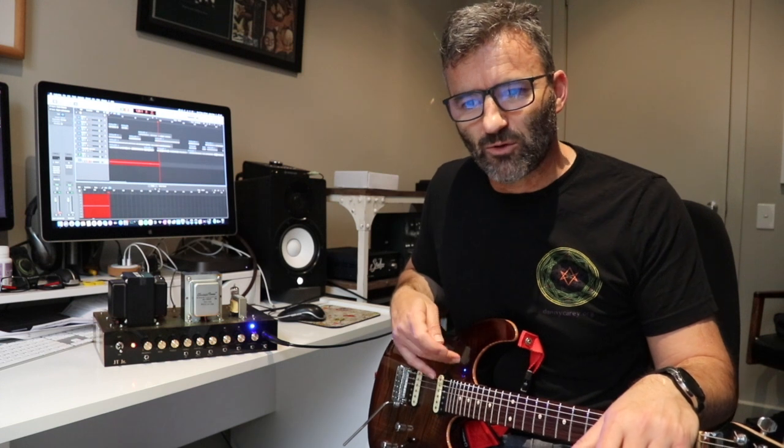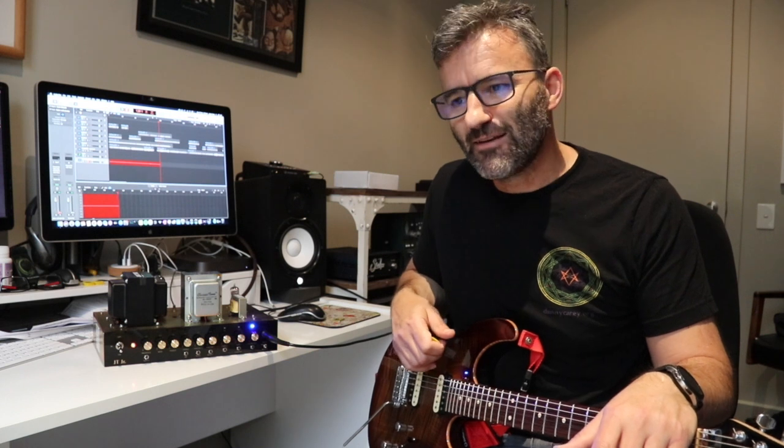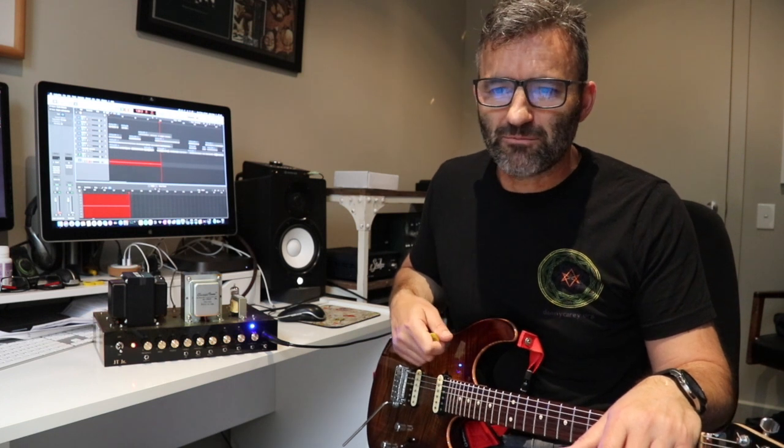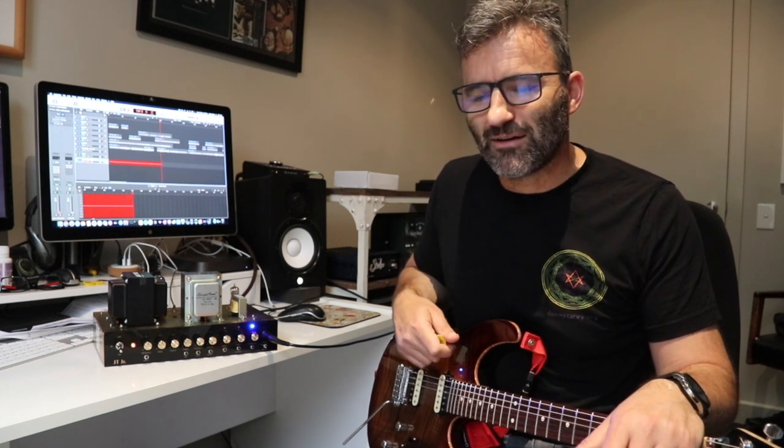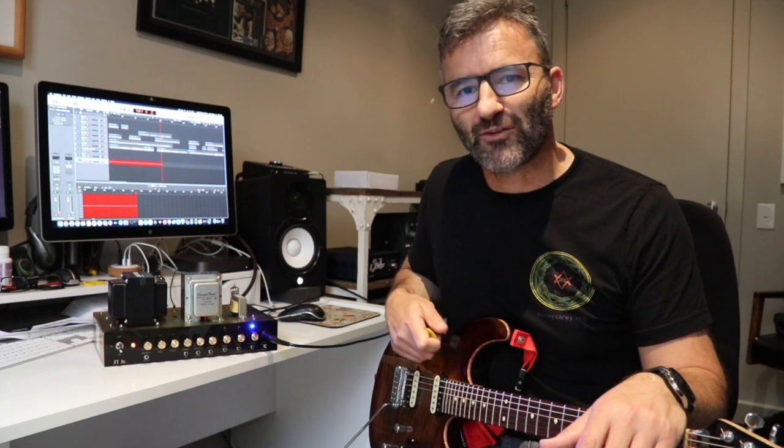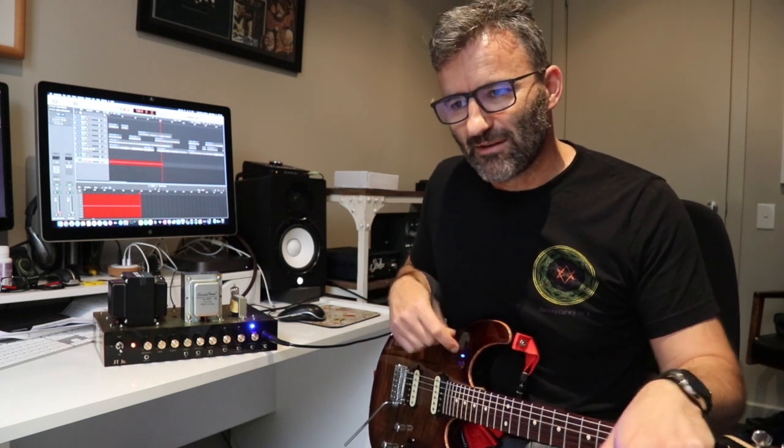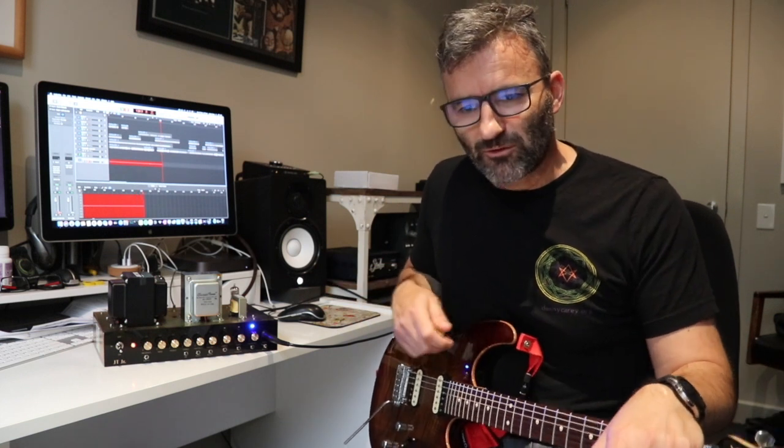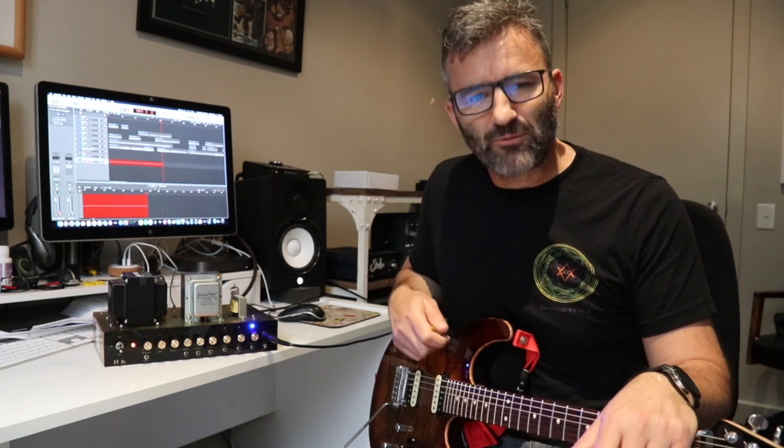The cathode bias is there to really set up for doing EL84 style amp which is actually how Friedman does all those mini amps that he has, the JJ Junior, Pink Taco, Dirty Shirley mini and so on. They all use that same EL84 style power amp cathode bias set up.